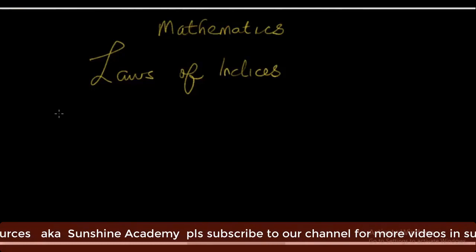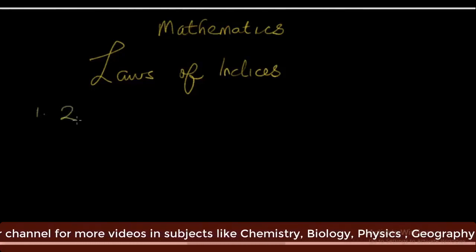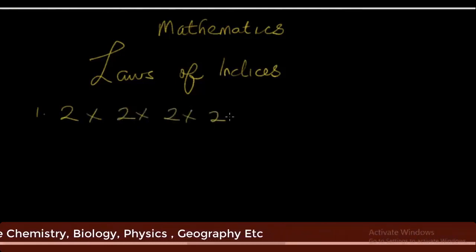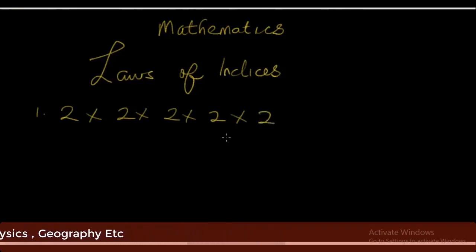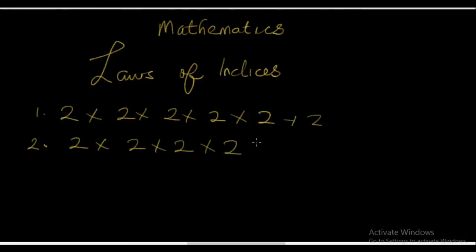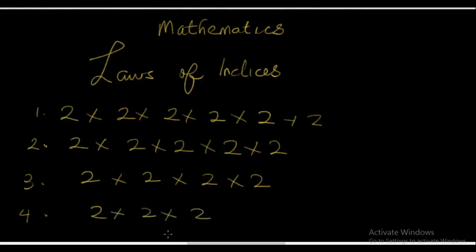Now, suppose we want to play with these numbers in this format. We have 2 times 2 times 2 times 2 times 2 times 2 — that's 6 of them. Then 2 times 2 times 2 times 2 times 2 — that's 5. Then 2 times 2 times 2 times 2 — that's 4. And 2 times 2 times 2 — that's 3 of them. These numbers can be expressed in the form of 2 raised to the power 1, 2, 3, 4, 5, and 6.